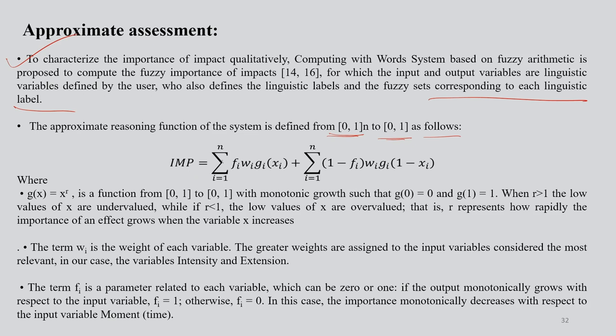IMP is a function: i = Σ[f_i · w_i · g_i(x_i) + (1-f_i) · w_i · g_i(1-x_i)], where g(x) = x^r is a function from [0,1] to [0,1] with monotonic growth. When r > 1, low values of x are undervalued; when r < 1, low values are overvalued. The parameter r represents how rapidly the importance of an effect grows when variable x increases.